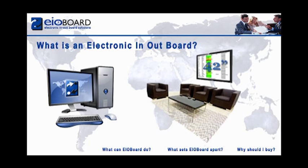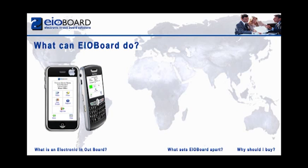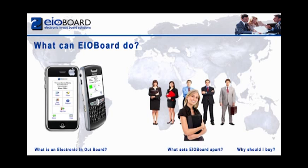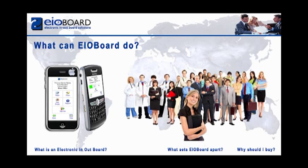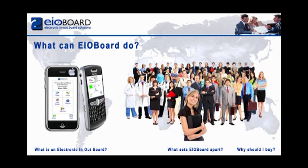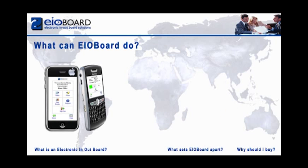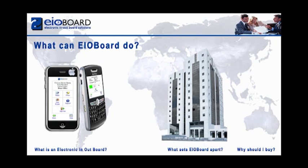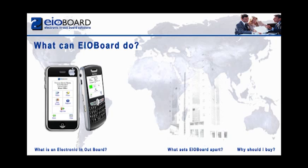Now let's talk about what EOBoard can do. EOBoard has the ability to be used in small groups of, say, 50 to 100 users, or large organizations of 5,000 to 10,000 users. EOBoard can track the status of an entire building from a single floor to multiple floors at the same time.